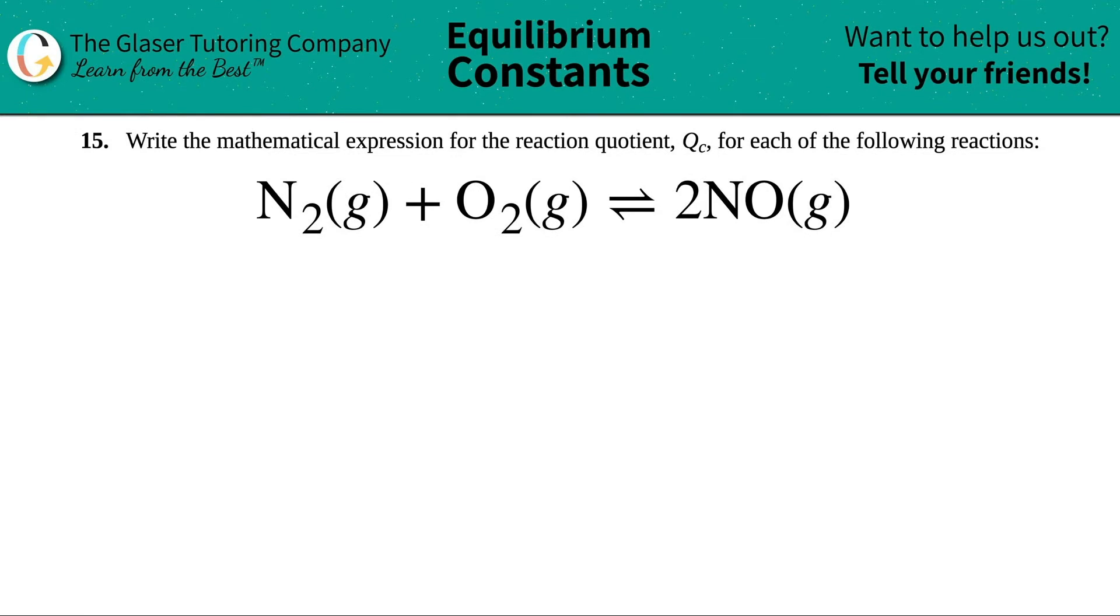Number 15, write the mathematical expression for the reaction quotient QC for each of the following reactions. So I have to find the QC for N2 gas plus O2 gas, which will come to equilibrium or will form 2NO gas.